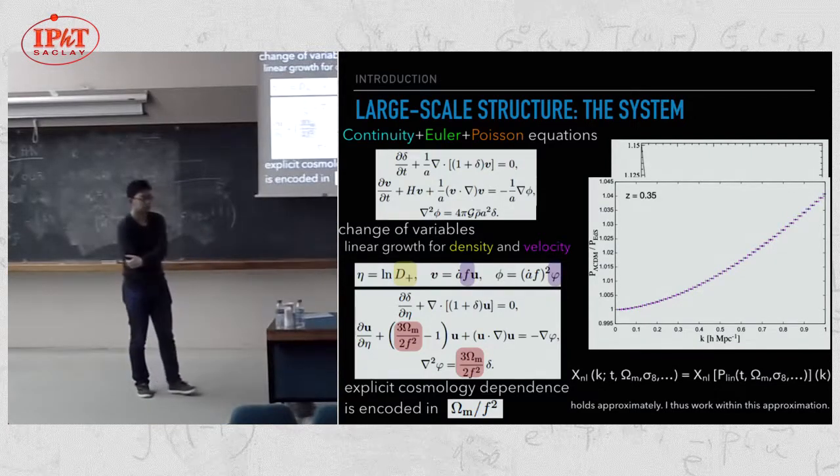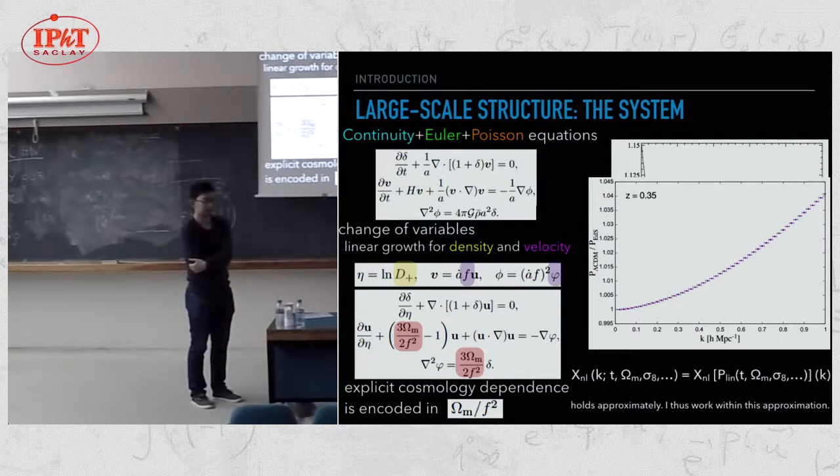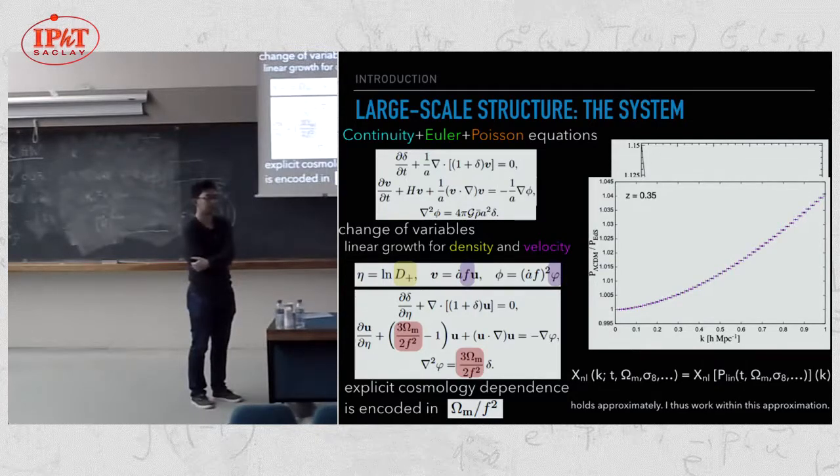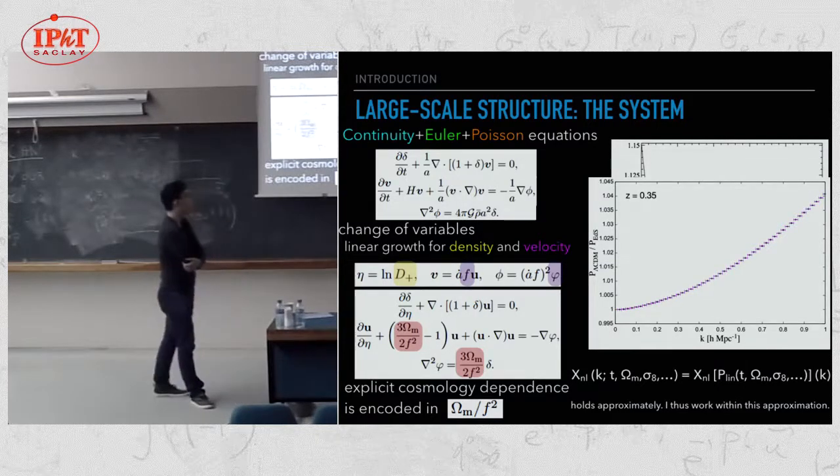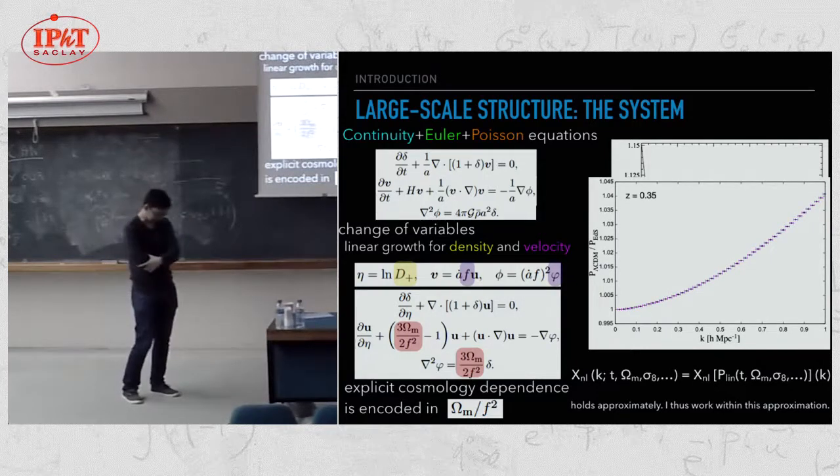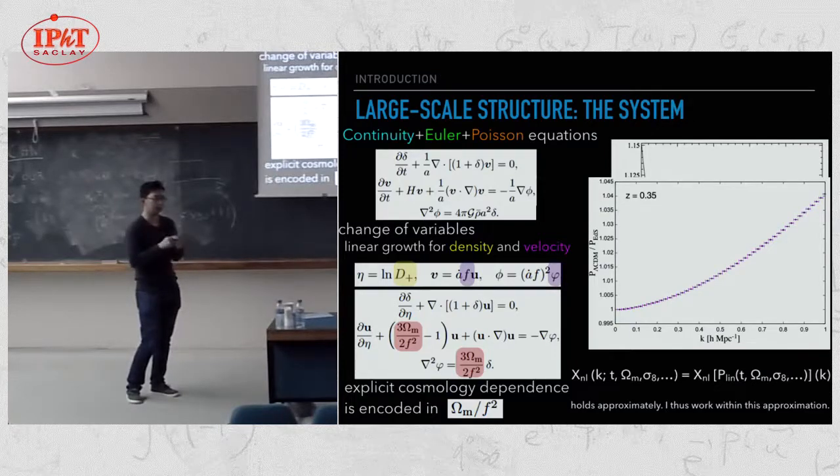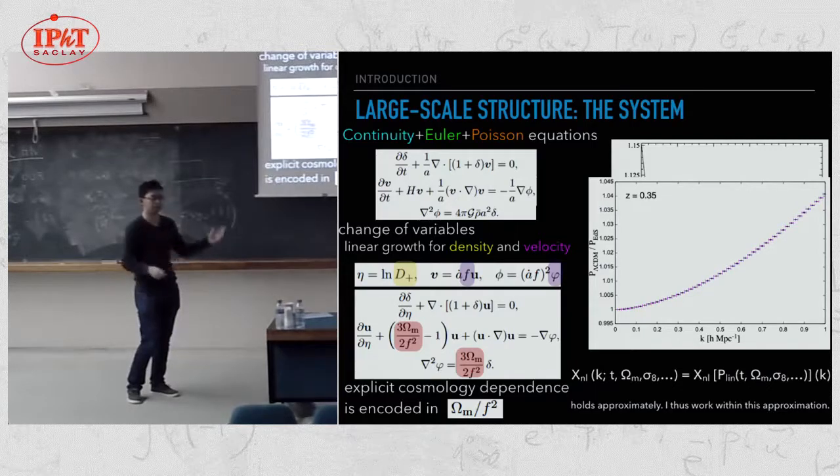And the other thing is, have you ever looked at, I mean, your response function, right? There's no reason why it would be a scalar, right? It should really depend on the angle between K and Q. Have you ever looked at that? No. I mean, not the anisotropic case. So this response function is already defined after the angle averaging operation. We haven't checked the more pure mode transfer by keeping the angle. We haven't checked it.